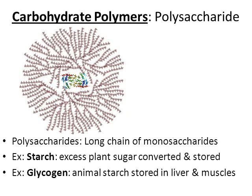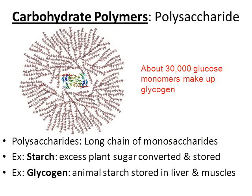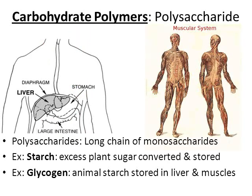The next polysaccharide is glycogen — the animal version of starch. You don't find glycogen in plants; it's found only in animals and is stored for energy, primarily in the liver and muscles. Glycogen is a fairly large molecule made from around 30,000 glucose monomers. Whenever we're low on blood sugar — from exercising or working hard — the liver and muscles release stored glycogen into the blood to raise sugar levels back up.